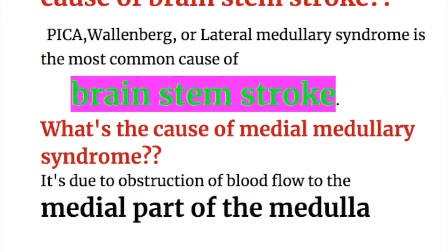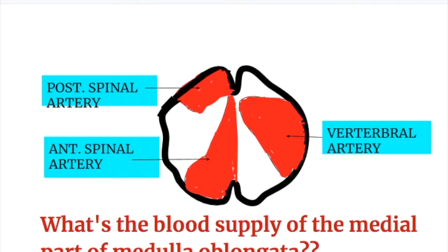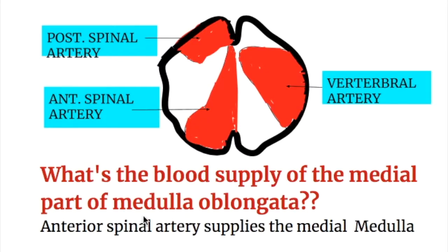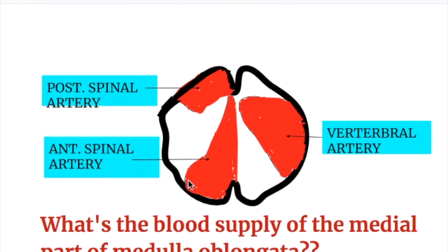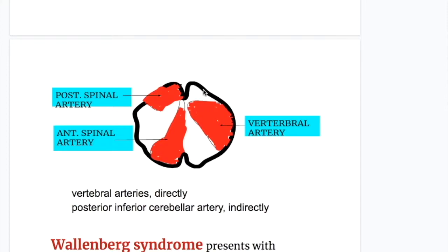What is the cause of medial medullary syndrome? It is due to obstruction of blood flow to the medial part of the medulla. The anterior spinal artery supplies the medial part of the medulla oblongata. The vertebral arteries supply the lateral portion, the posterior spinal artery supplies posteriorly, and the anterior spinal artery supplies the medial part.